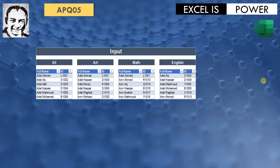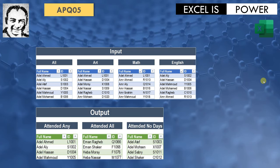We have four tables. The first one contains the names of all students. The second one contains students registered in the art class. The third one is math class. The fourth one is English class. We need to do three comparisons: first, a list of students who attended any of the three classes; second, a list of students who attended all classes; and the last one, a list of students who attended no classes.